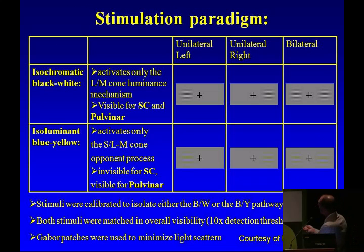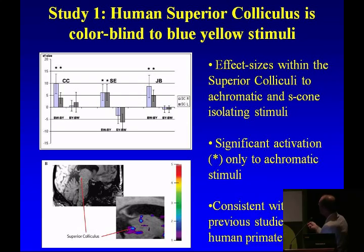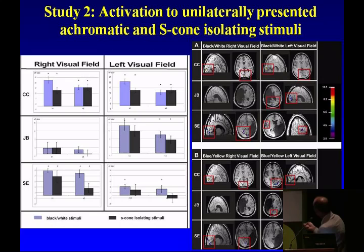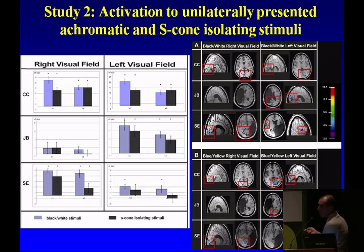When we looked at effect sizes within the superior collicula to achromatic and S-cone-isolating stimuli, we find significant activation only to achromatic stimuli, consistent with previous studies in non-human primates. For black-and-white stimuli in the left visual field, the subject without blindsight shows no activation, while the one with blindsight shows bilateral activation. The control subject shows no problem activating those regions. For blue-yellow, the subject activates with black and white in the left visual field but not with blue and yellow.